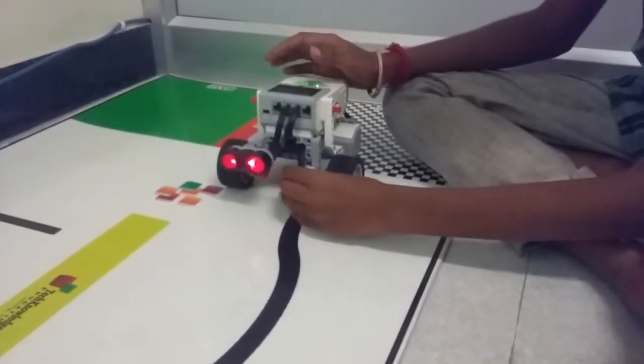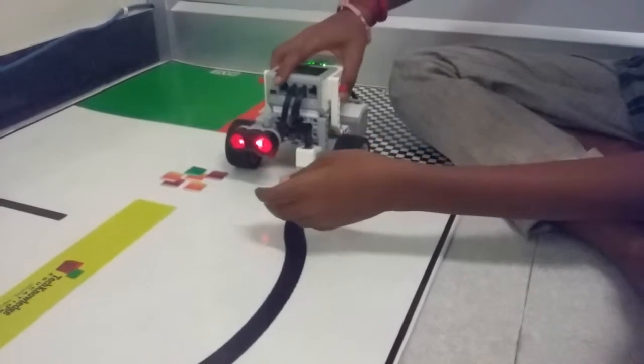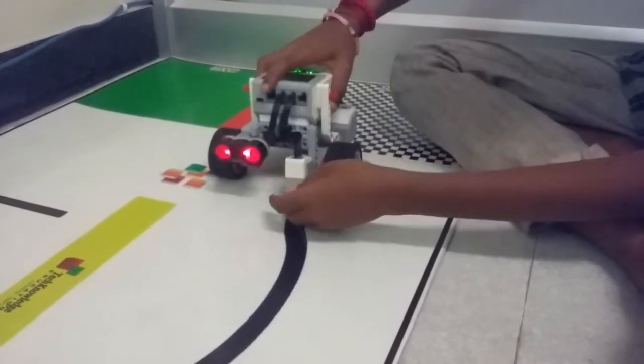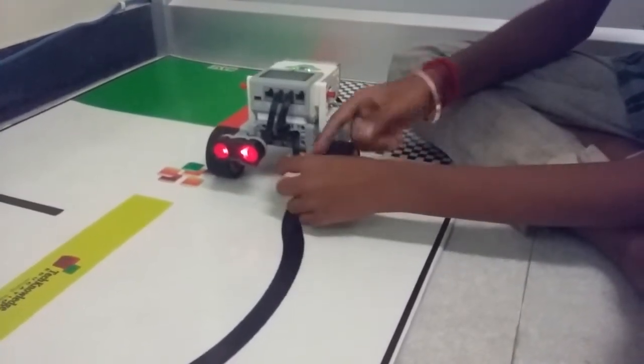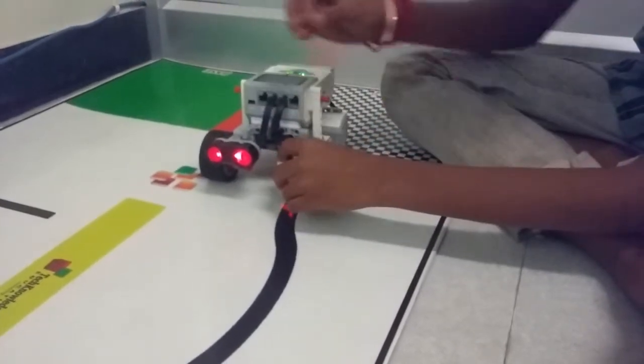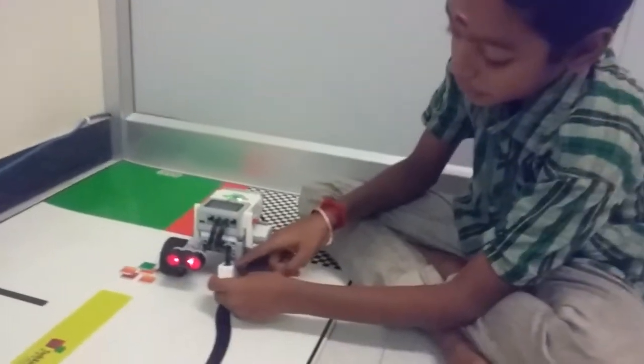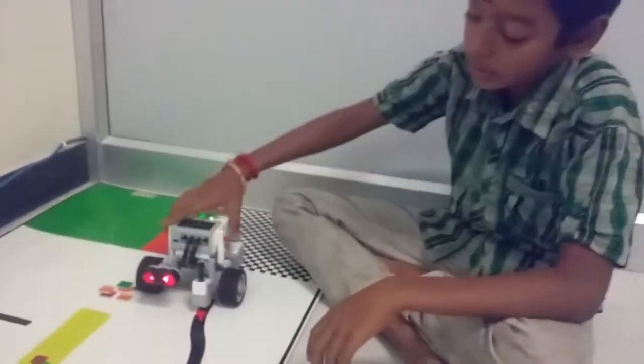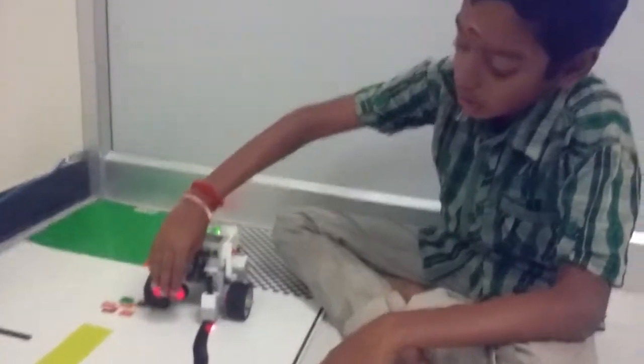Color sensor is to follow the line. This is an ultrasonic sensor.